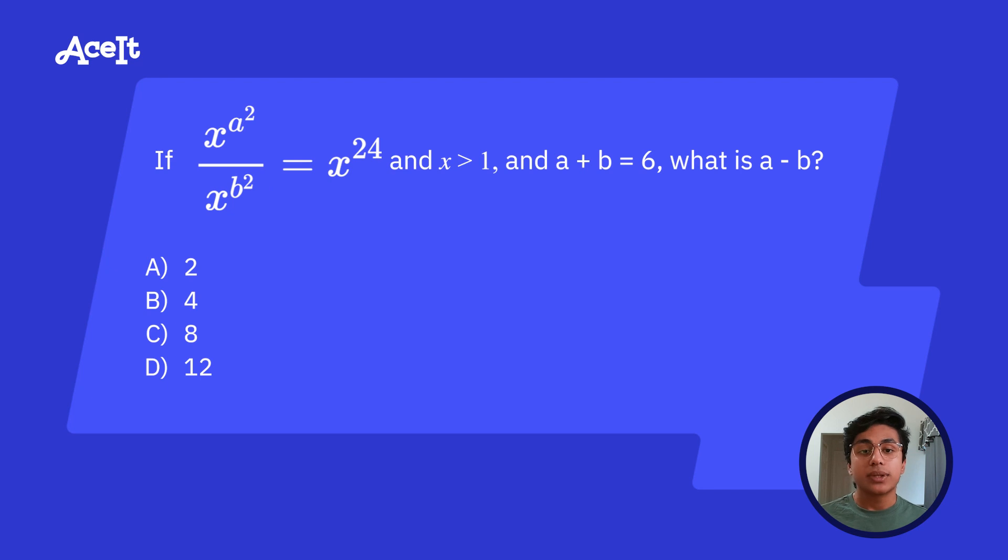The last question I wanted to go through in this video is one that makes you apply the exponent rules in a pretty creative way, which makes it an example of a difficult SAT math problem. So in the problem, we have an expression here that says x raised to the a squared over x raised to the b squared is equal to x to the 24th power. We're also given that a plus b is equal to 6. And the question is asking us to find the value of a minus b. So pause the video real quick and see if you can figure out what the question is trying to make you do. I said before, this is an example of a difficult SAT math problem, so don't worry if you can't get it. We're going to work through it together in a second.